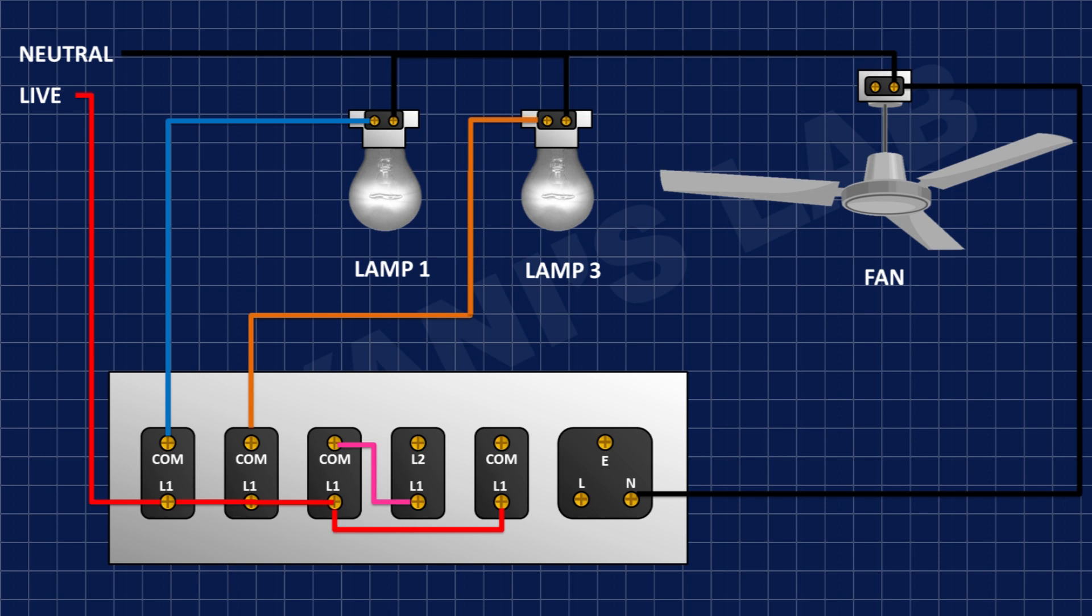After that, I'm going to connect the L2 pin of the dimmer to the fan, then the common pin of the fourth switch to the line pin of the socket, then the earth wire to the earth terminal of the socket. Our switchboard connections are completed.